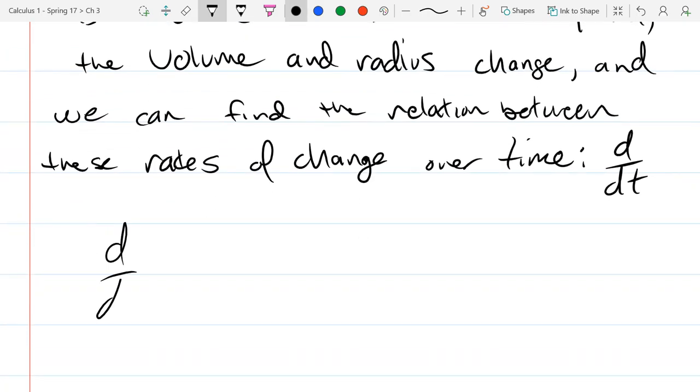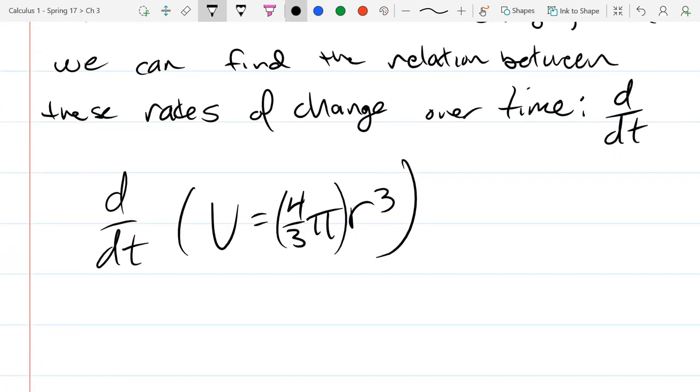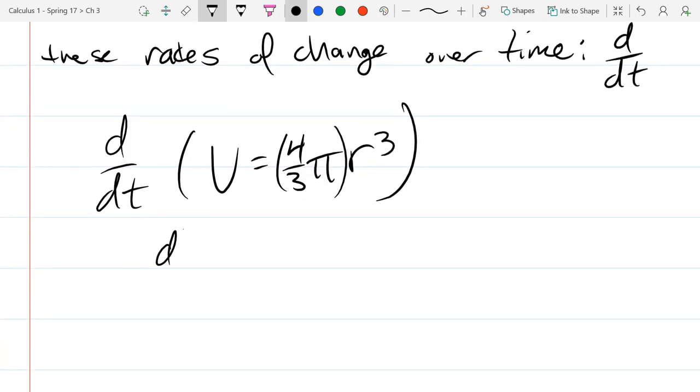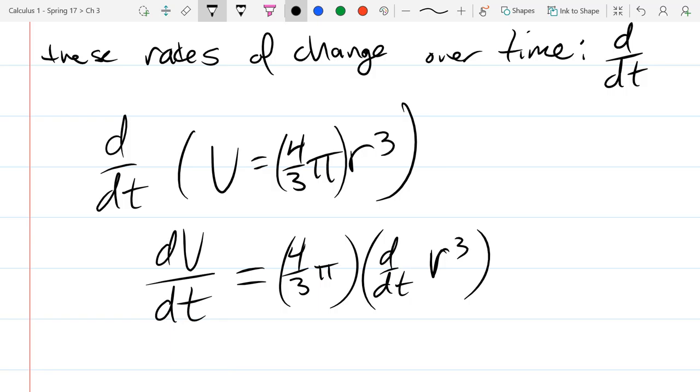So all we do is find d dt of our original equation. Remember, four thirds pi, even though pi is a letter, it's a constant. I'll take derivative of the left side, and I want you to take derivative of the right side. I'll do the first part for you, which is the constant multiple rule. R is not constant, so I pass the derivative through the four thirds pi. I want you to compute the derivative of r cubed using that implicit derivative rule, also known as chain rule.